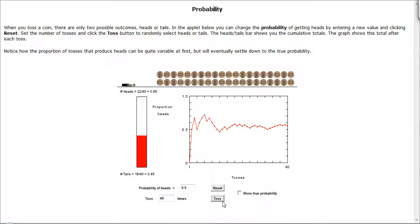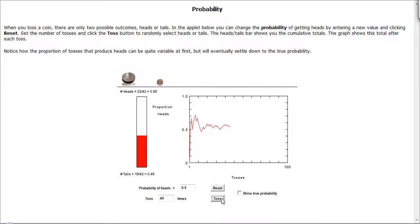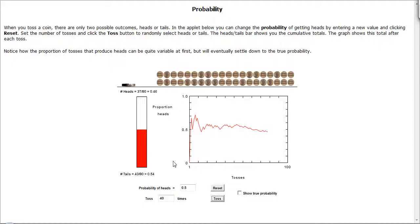So if I toss this another 40 times, we see that we have the proportion of tails and the proportion of heads really hanging close to what we've assigned these true probabilities to be. And if we toss it another 40 times, we will see this get even closer.